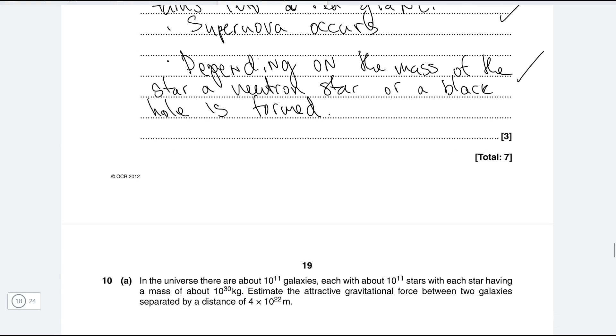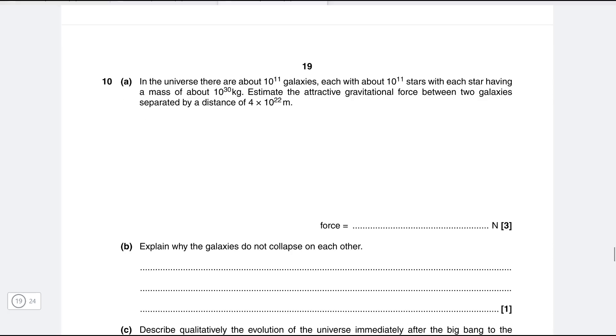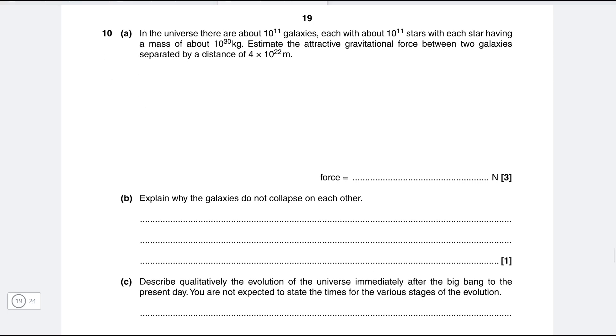Okay right let's have a look at the next one. In the universe there's about 10 to the 11 galaxies each with about 10 to the power of 11 stars, each having a mass of about 10 to the power of 30 kg. Estimate the attractive gravitational force between two galaxies separated by a distance of 4 times 10 to the power of 22.